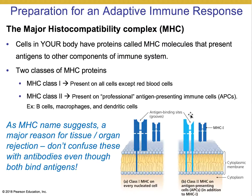The major role of the MHC protein complex is to bind and position antigens that have been captured, and present them to the immune system — like little trophies to alert the rest of the immune system of what was found. Importantly, these MHC complexes do not bind proteins or pathogens that are just outside the cell. The only way antigens get onto MHC complexes is because they are loaded from within the cell. Don't confuse these with antibodies — even though both bind antigens, these are entirely different.